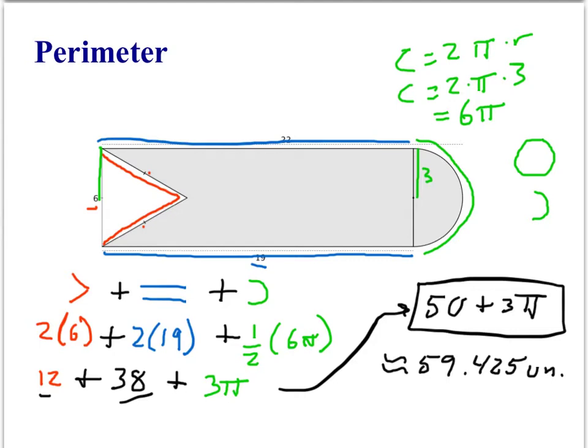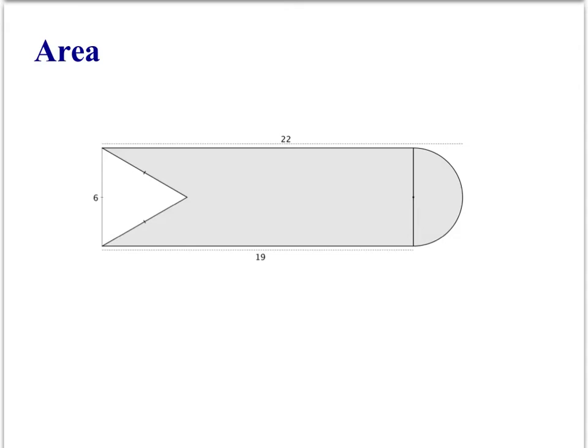The next problem deals with the area of the same shape. Now to find the area, we're going to do something kind of similar. But we're going to be a little bit devious about how we figure out removing this little triangle. So let's game plan this out.